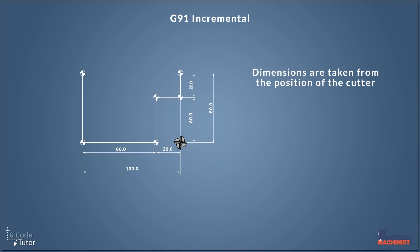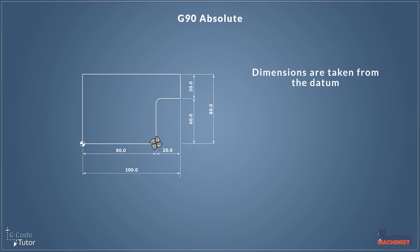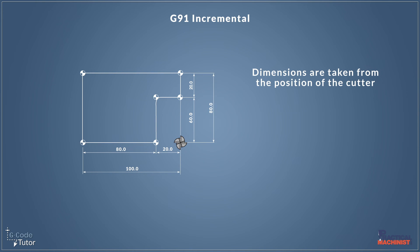So our next movement — moving a further 20 millimetres to the right — we would only tell the machine that we wish to move 20 millimetres and not 100. So the way I always remember it: the G90 absolute measuring system — all dimensions run from the datum; and the G91 incremental measuring system — all dimensions run from the last known position of the cutter.